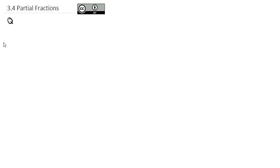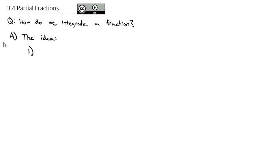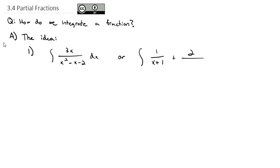Continuing to work on advanced integration techniques, we're going to answer the question: how do we integrate a fraction? More appropriately, how do we integrate a rational function, which is basically just a fraction. If you had to choose to integrate 3x over x squared minus x minus 2 dx, or to integrate 1 over x plus 1 plus 2 over x minus 2 dx, which one seems the easiest to do?